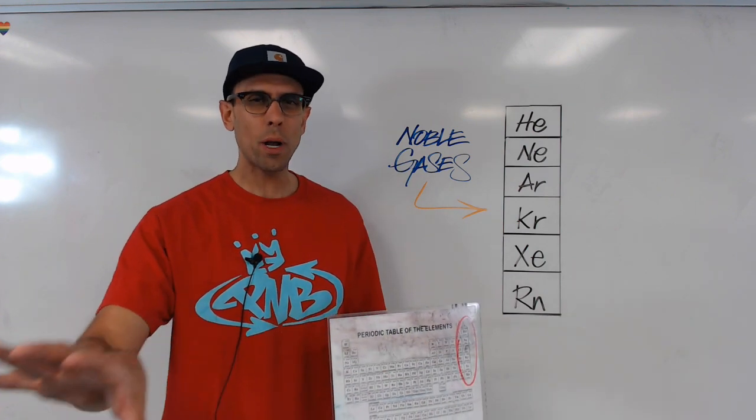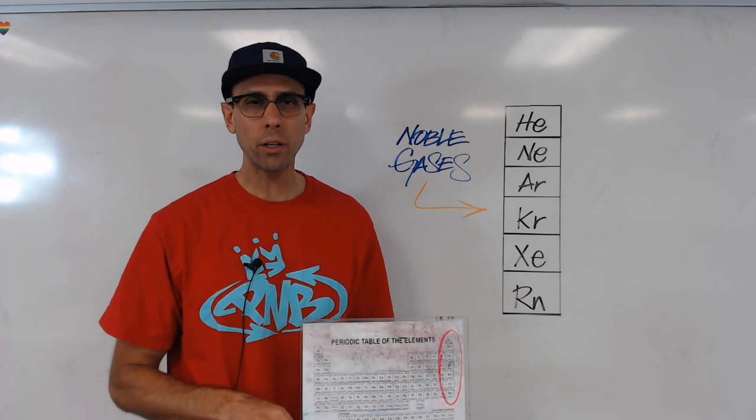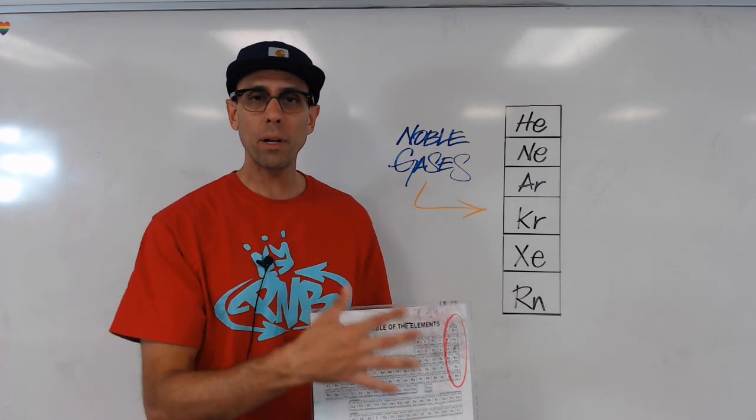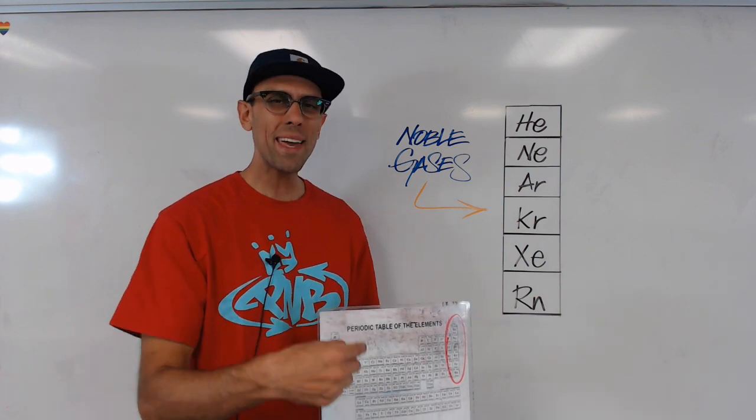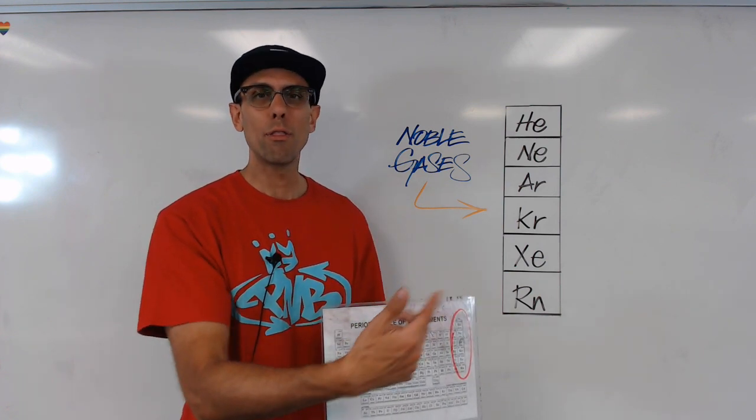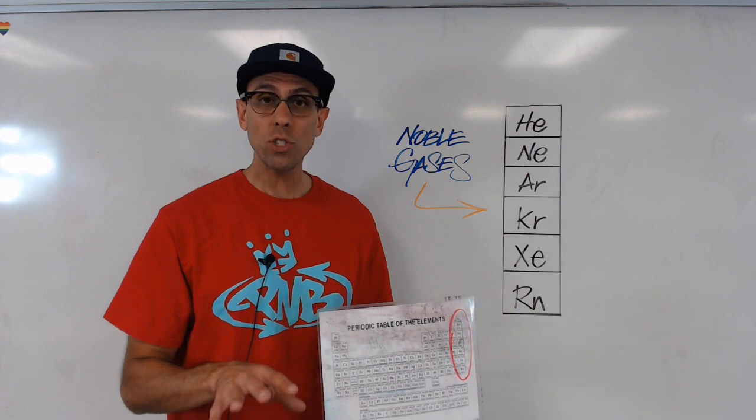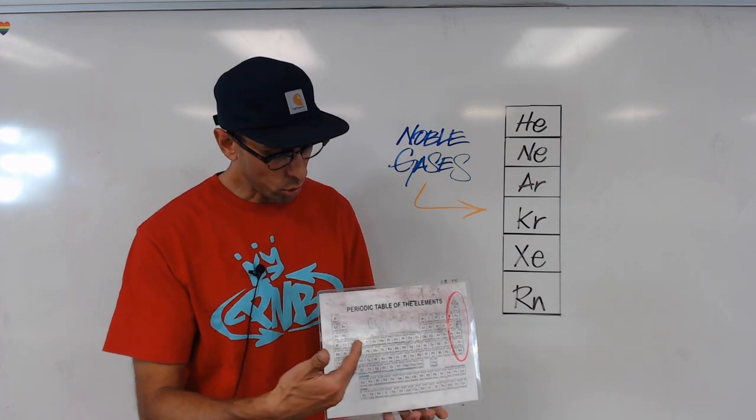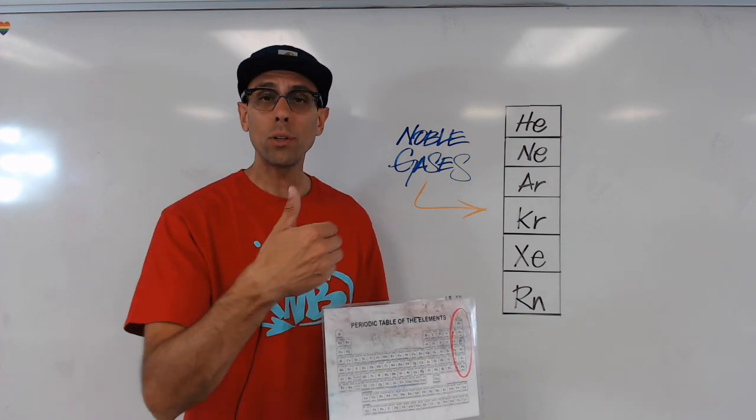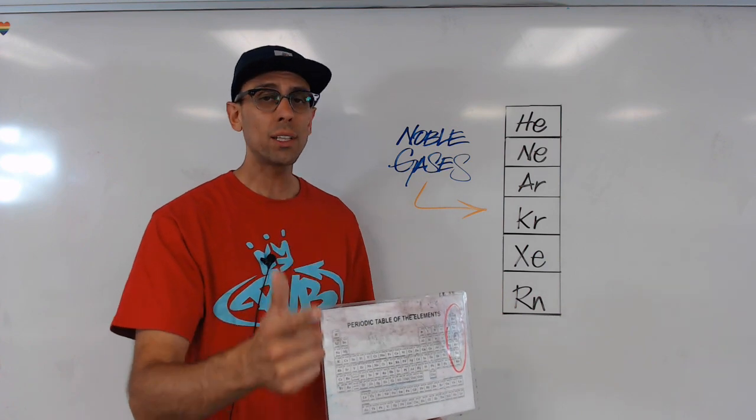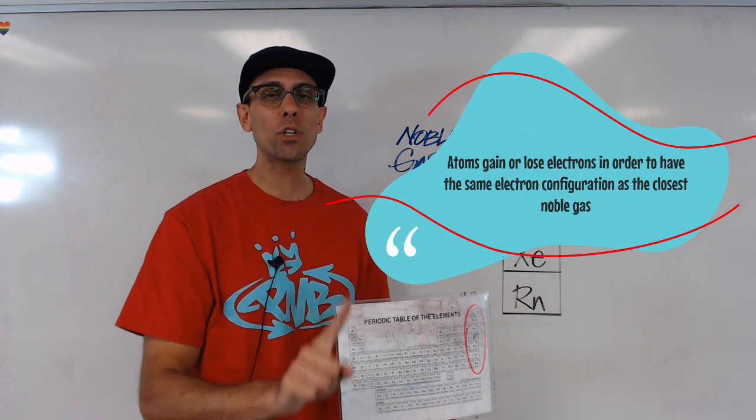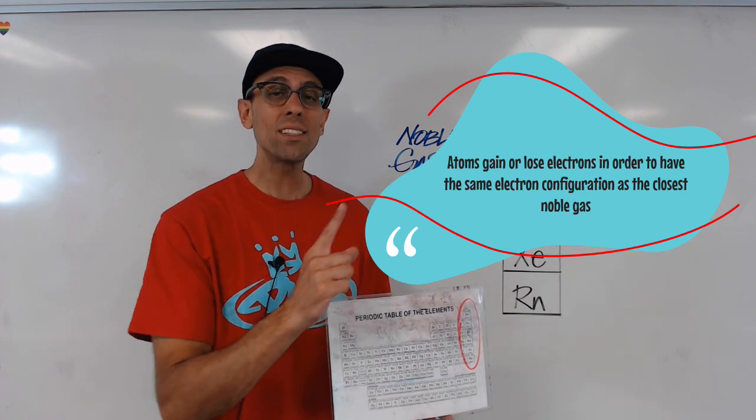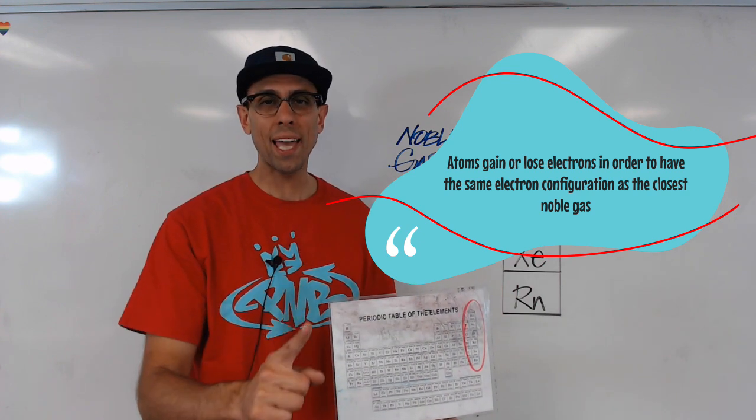Now, in nature and experimentation, we've noticed a pattern. Other atoms on the periodic table in our universe tend to actually want to be like or mimic the noble gases. That's right. Atoms, whether metals or non-metals, will gain or lose electrons in order to have the same electron configuration as the closest noble gas.